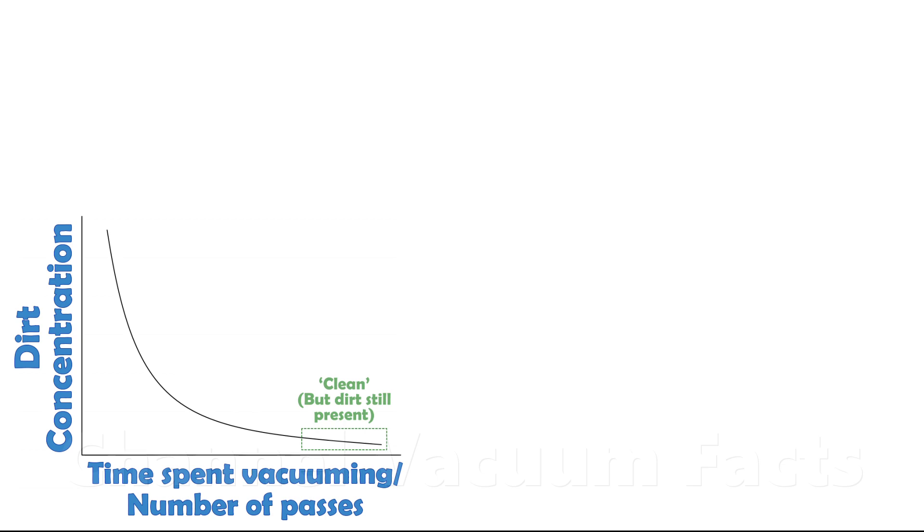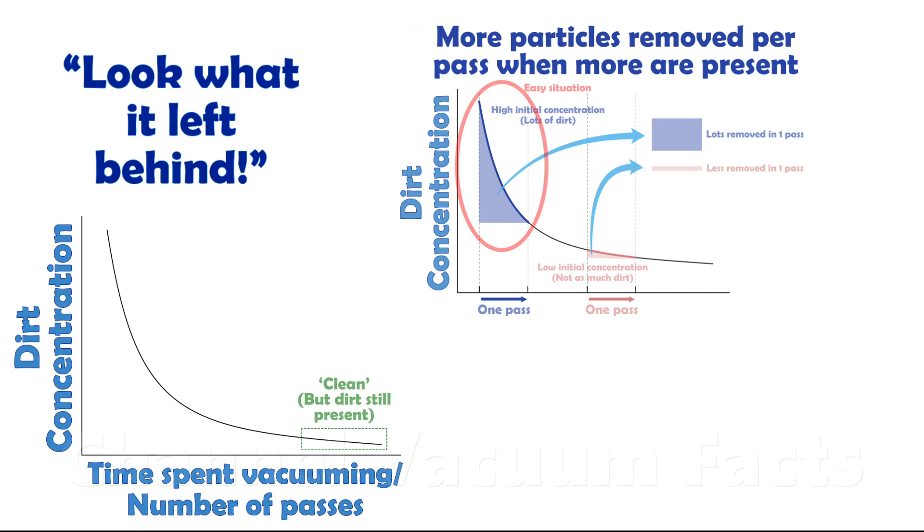Two chestnut examples of such misunderstanding are firstly, when people wrongly conclude a vacuum isn't very good because a second vacuum cleaner later found something left behind. And secondly,